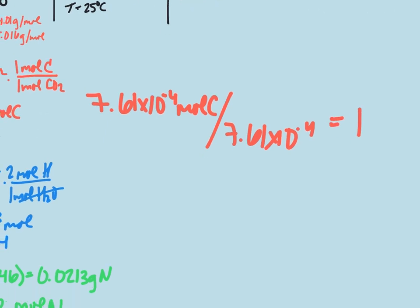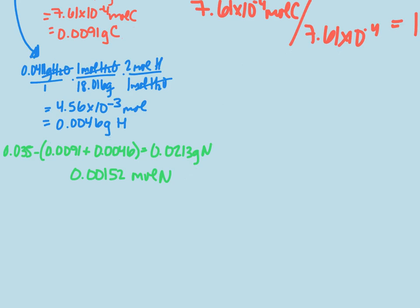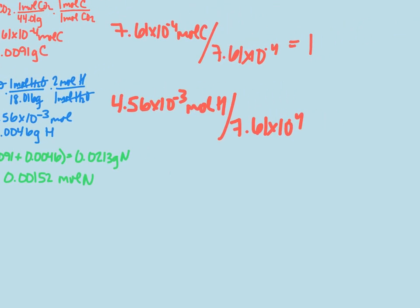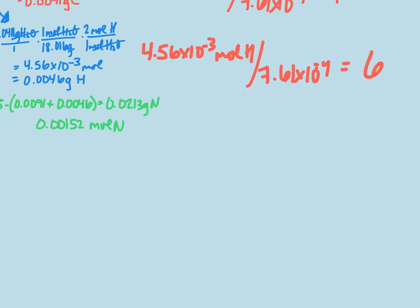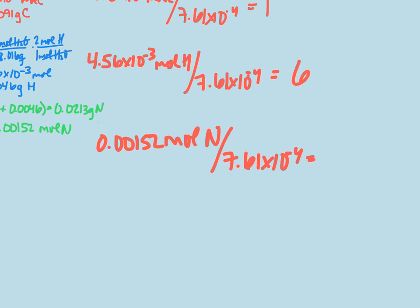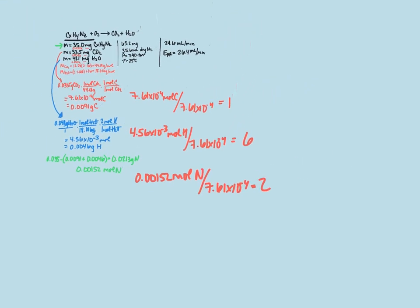Doing that with our hydrogen, we have 4.56 times 10 to the negative 3 moles of hydrogen, divided by our 7.61 times 10 to the negative 4th. And we get, rounding it, approximately 6. And then finally, 0.00152 moles of nitrogen, divided by our 7.61 times 10 to the negative 4th. And we get approximately 2.